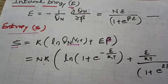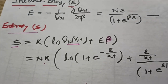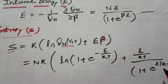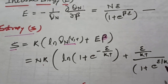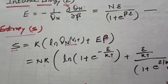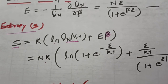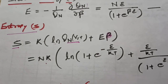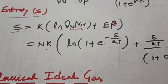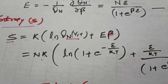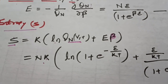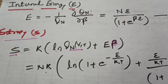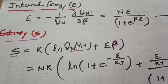So in this lecture we have discussed a two-level system with energies zero and epsilon using the canonical ensemble, deriving the partition function, Helmholtz free energy, internal energy, and entropy. In upcoming lectures we will discuss other systems like the classical ideal gas, the classical oscillator, and the quantum oscillator. Thank you for watching.